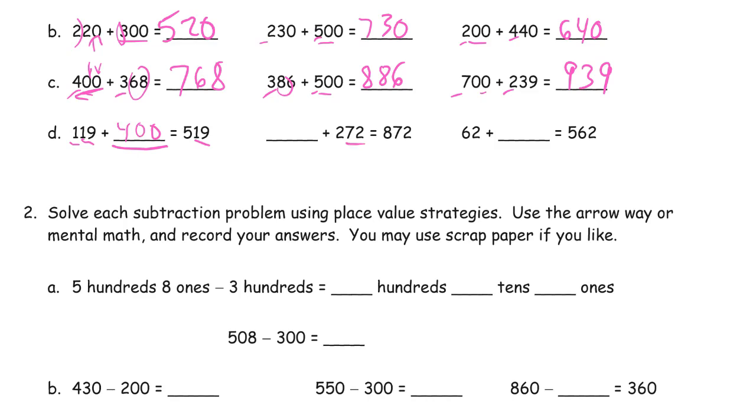Same thing here. We have 72 in this addend already so we don't need to add any ones or tens. We just need to add hundreds. We need six hundreds more. And here we have the tens and the ones already in one of the addends. We just need all the hundreds. 500.